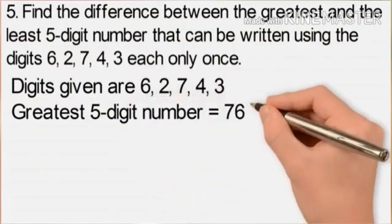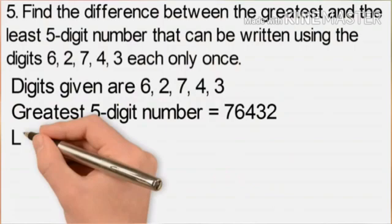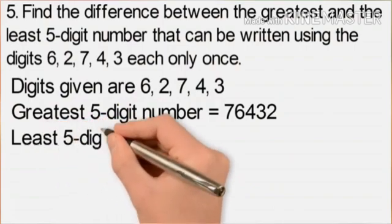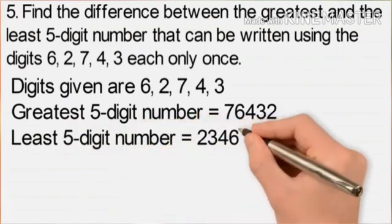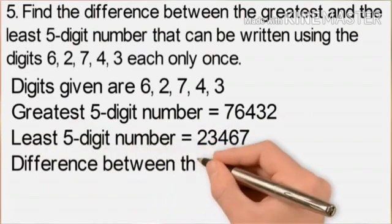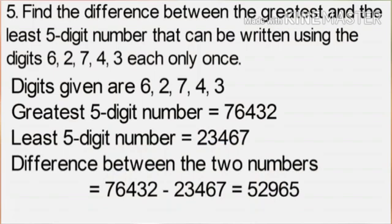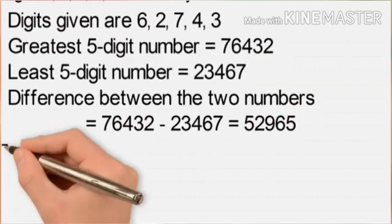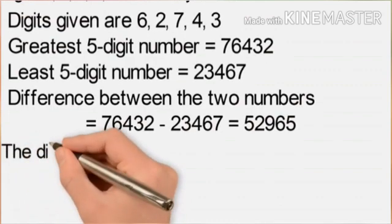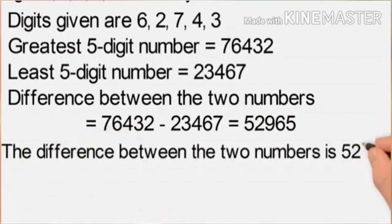Given digits are 6, 2, 7, 4, 3. To form the greatest five-digit number, arrange in descending order: 76,432. To form the least five-digit number, arrange in ascending order: 23,467. The difference equals 76,432 minus 23,467, which equals 52,965. Therefore the difference between the two numbers is 52,965.